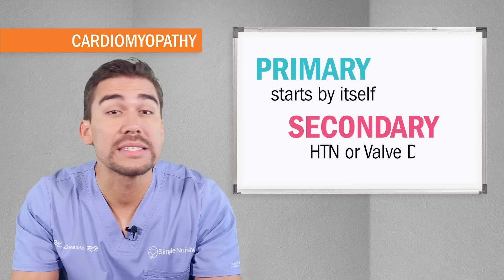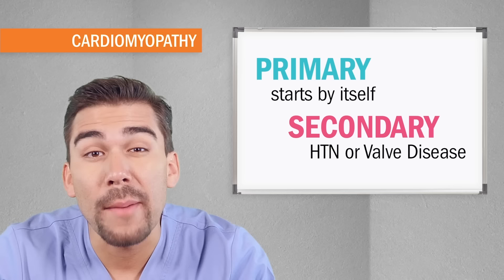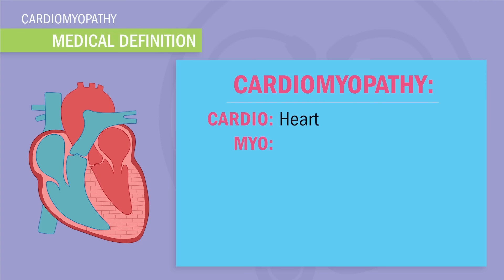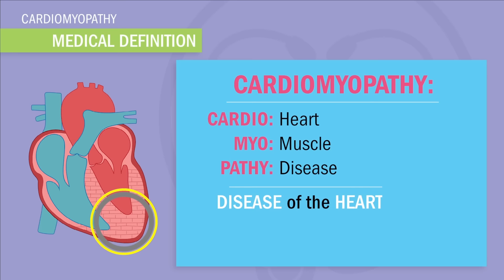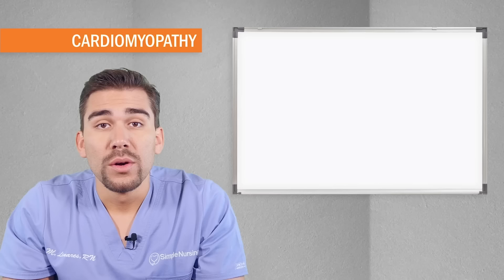But before we further break down the causes, let's define what cardiomyopathy is. The fancy medical definition: cardio meaning heart, myo meaning muscle, and pathy meaning disease. So cardiomyopathy is a disease of the heart muscle — the myocardium — which inhibits effective pumping. Essentially we have pump failure problems here, which again leads to less cardiac output, meaning less oxygen to the body.